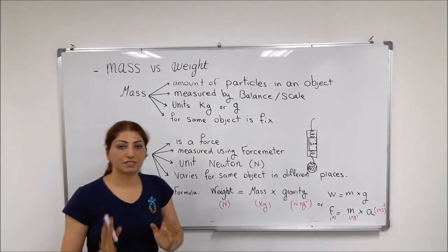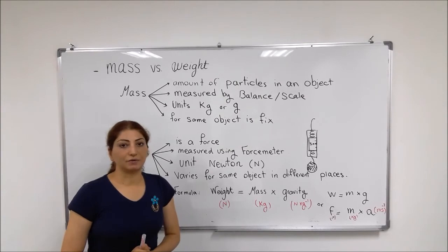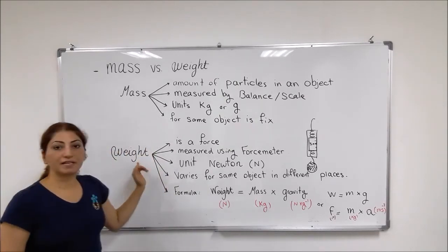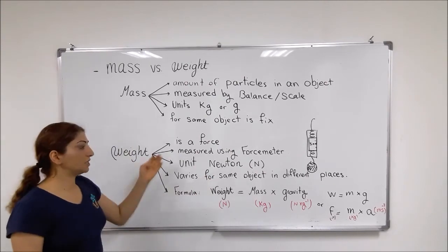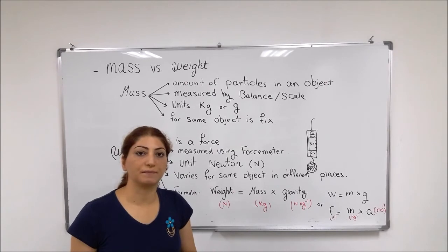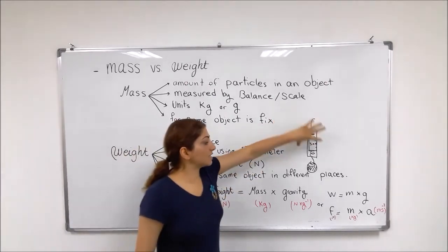So mass is a fixed value for the same object. But we have weight on the other hand. We have weight and weight of the object is measured by using a force meter.